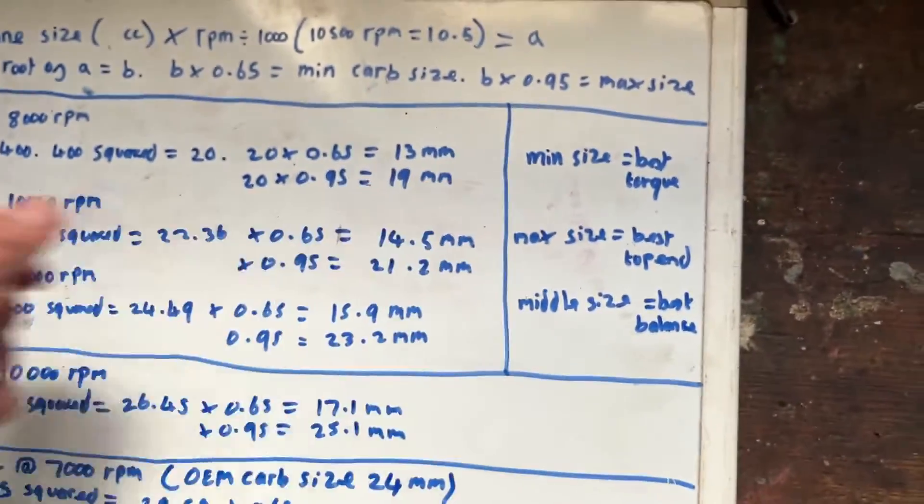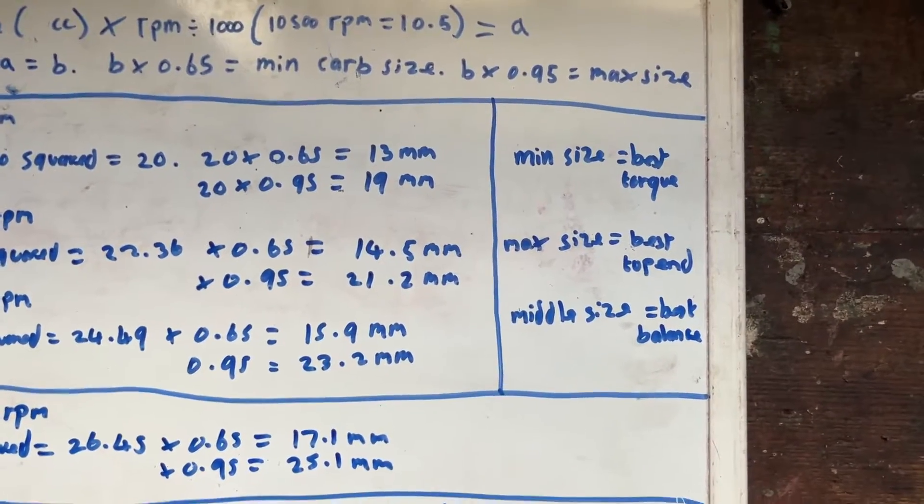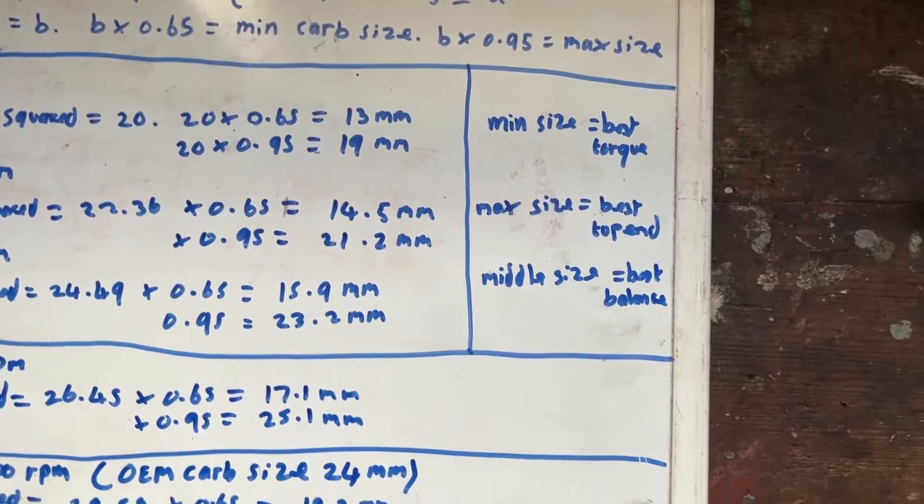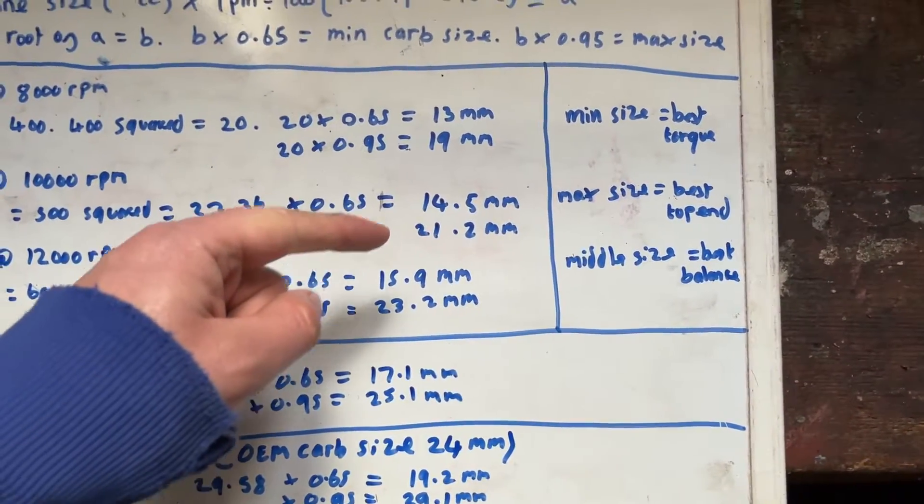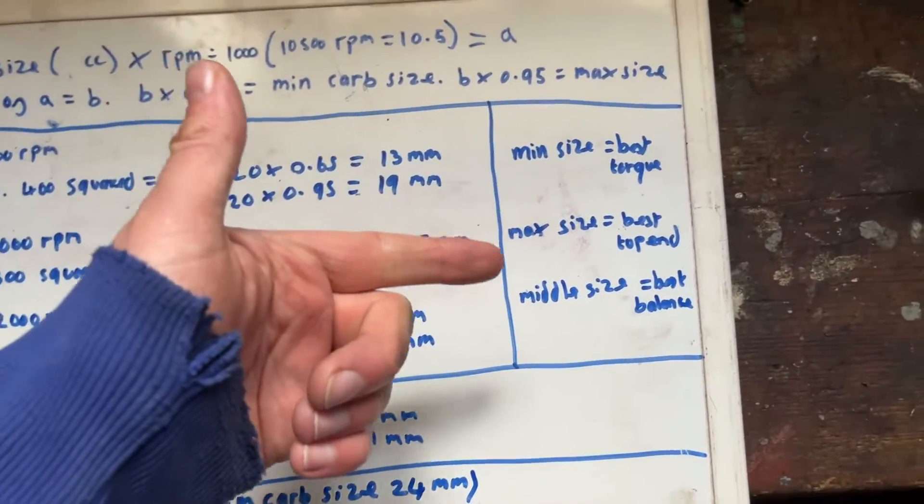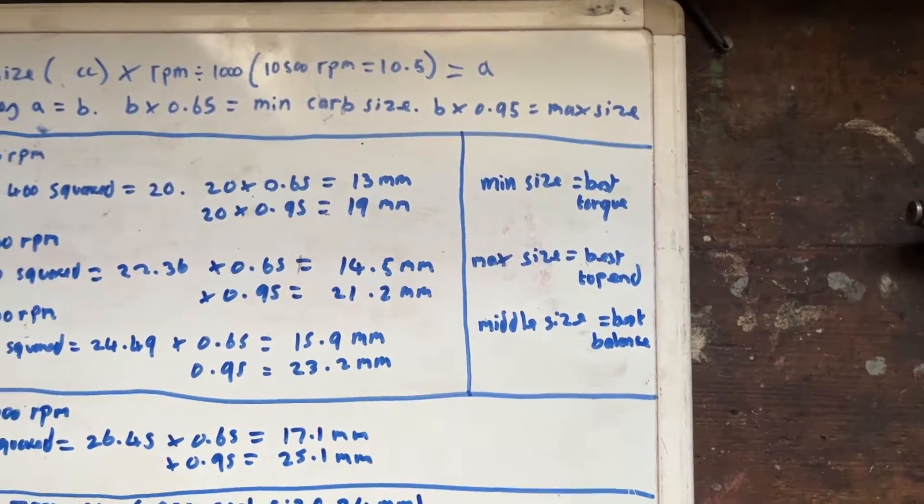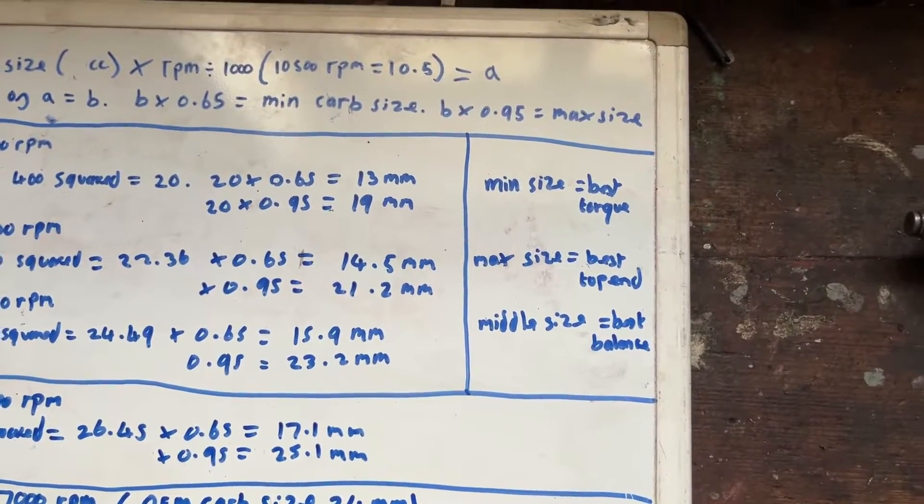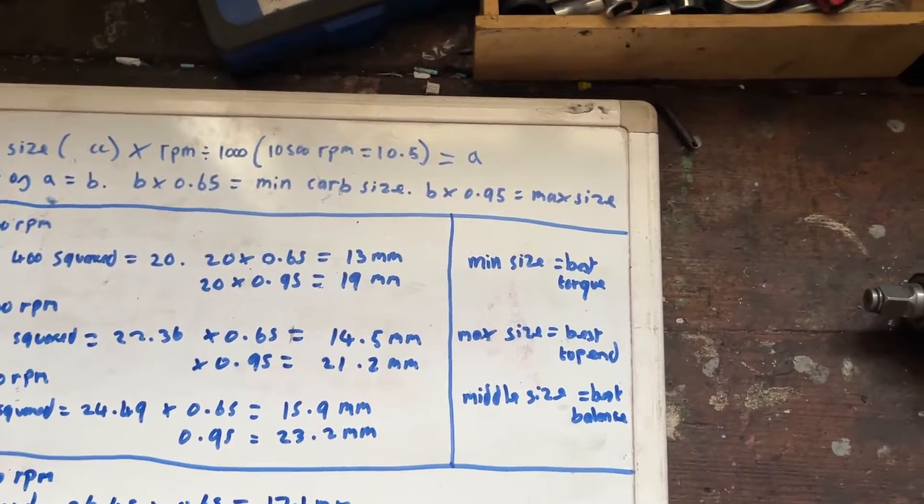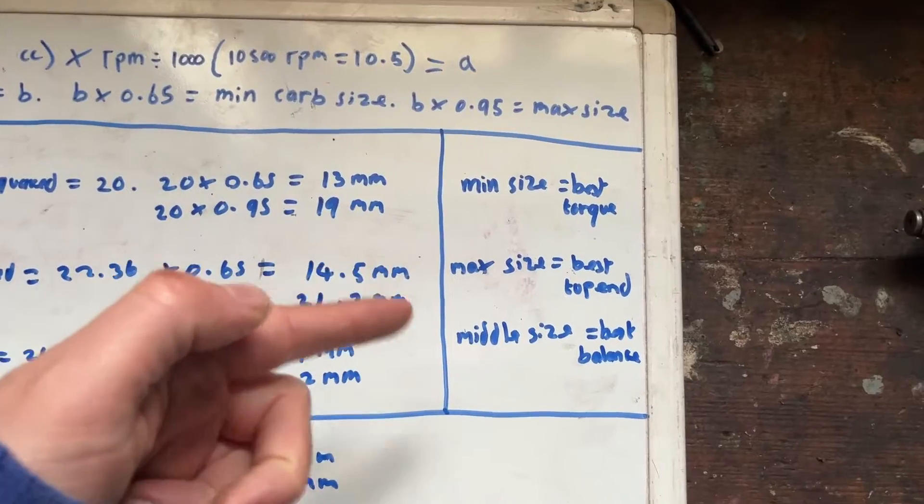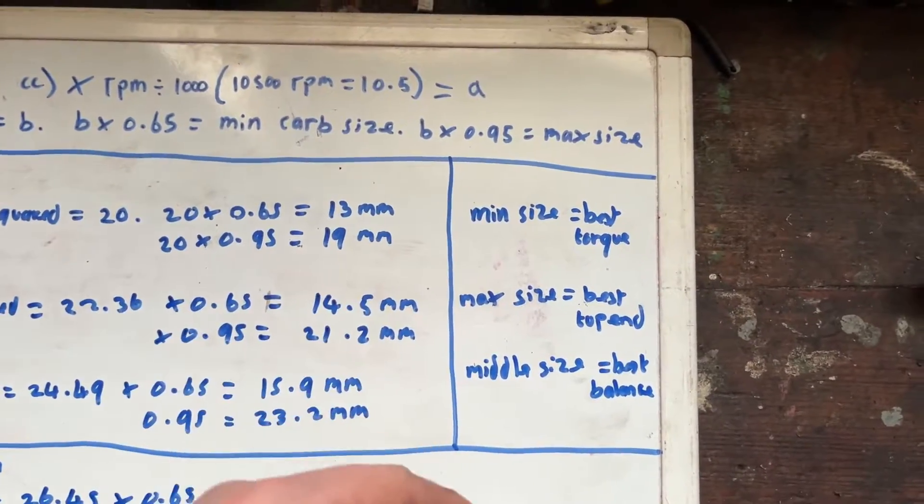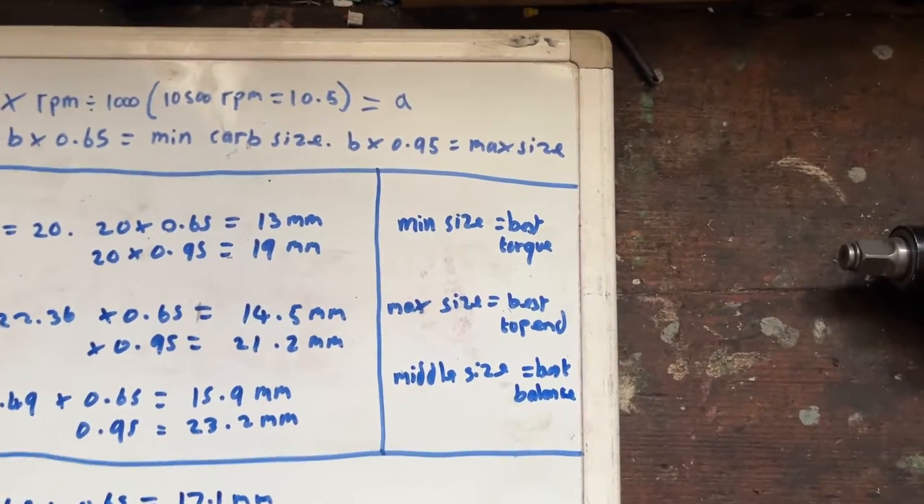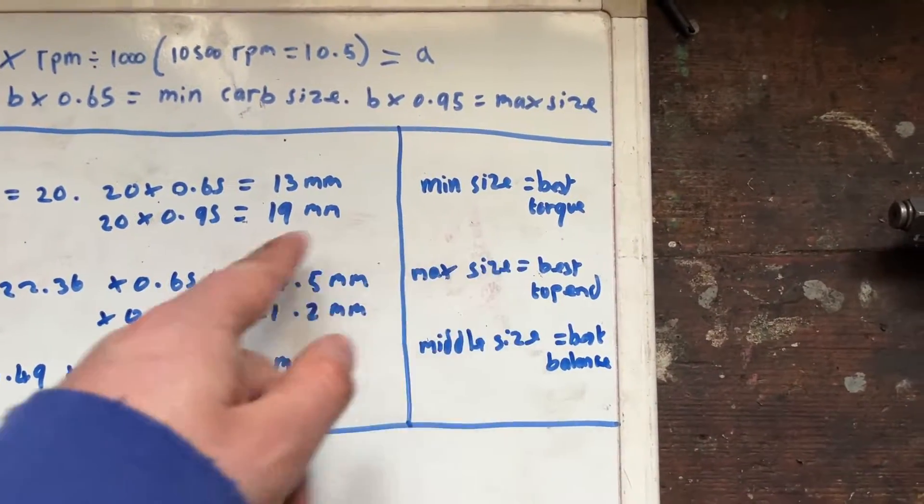You can decide, do I mostly ride my bike around town? Do I want it to have a really strong pulling away power? Then you probably want to go for the slightly smaller size. Whereas if you're basically taking it to a track and you want to go max speed and have the best top end, but don't care too much about the acceleration being a tiny bit slower, then you go for the maximum size carb. And if you want the best of both worlds, you go somewhere in the middle for a balance.